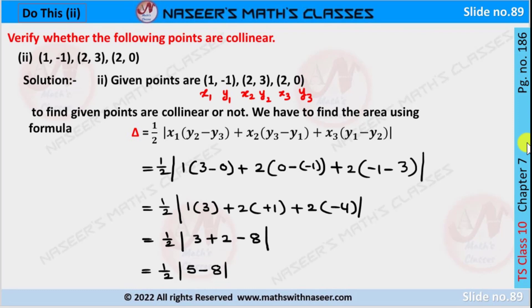Page number 186, chapter 7, coordinate geometry. Verify whether the following points are collinear or not.